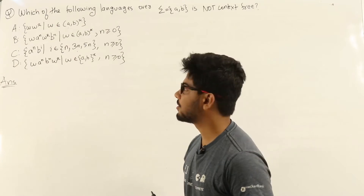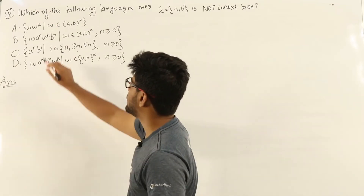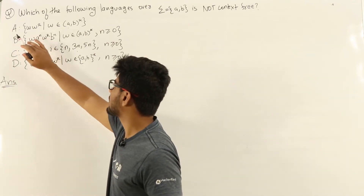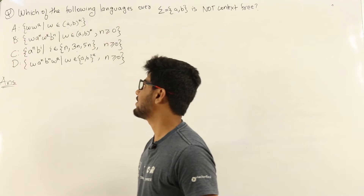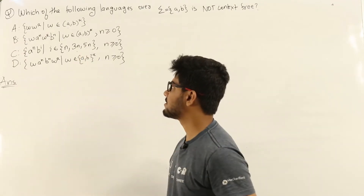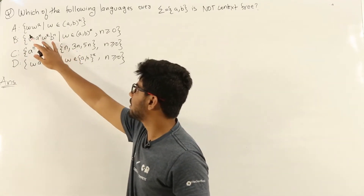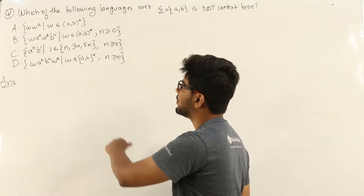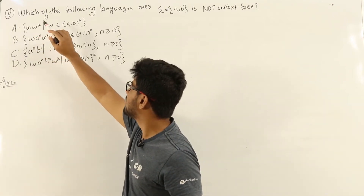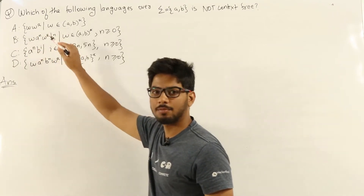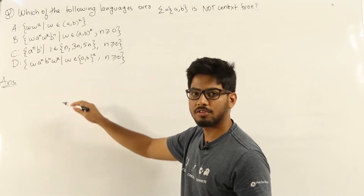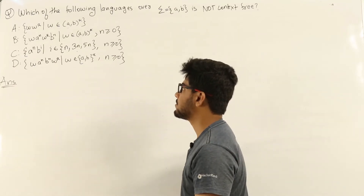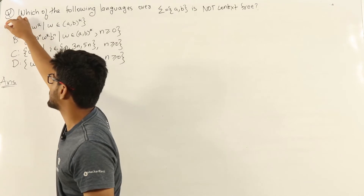Option A: w w-reverse. This is clearly a context-free language. We can create a non-deterministic pushdown automata for this language. Initially we push all the alphabets a or b we see to the stack, and at each point we start popping off alphabets from the stack depending on the input, matching each element on top of the stack with the current input. So this is a context-free language.